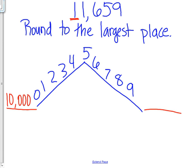On the right side of my hill, I'm going to go up by one on my underlined number. Everything else will become zeros.